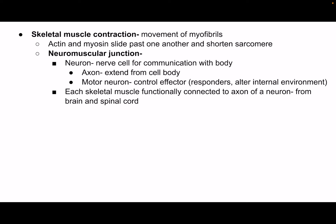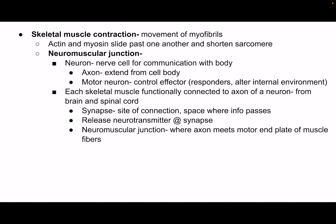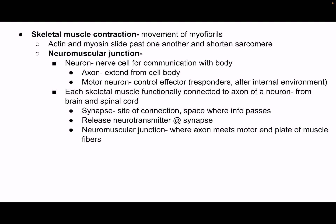At the neuromuscular junction, we have the synapse — a tiny gap between the end of the axon and the muscle cell. What travels across that gap are neurotransmitters. They release a neurotransmitter at that synapse, and it travels from the axon to the muscle cell at a place called the motor end plate. So the neuromuscular junction is the spot where the axon meets the motor end plate of the muscle fiber.